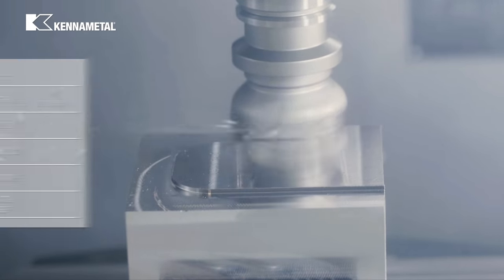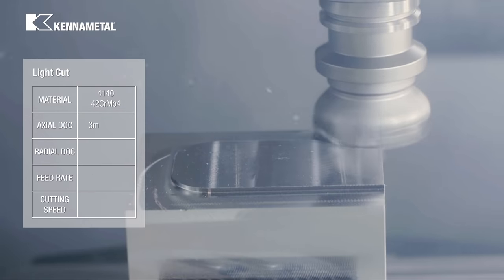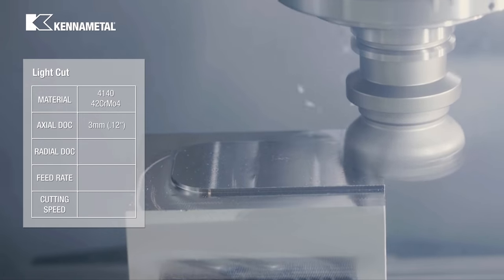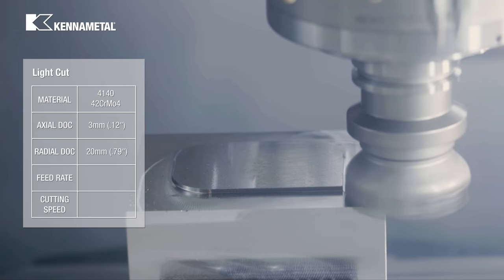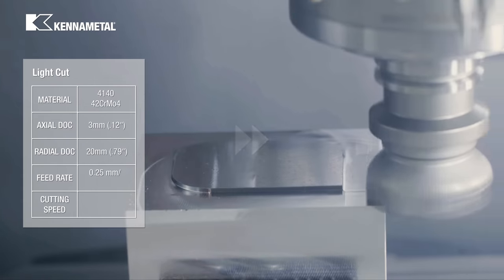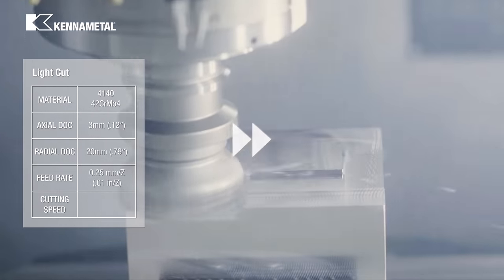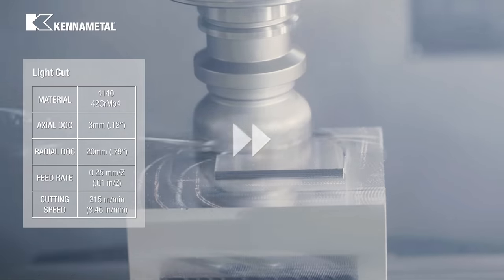Each pass with the following cutting parameters: 3 millimeter axial depth of cut, 20 millimeter radial depth of cut, a feed rate of 0.25 millimeters per tooth, and 215 meters per minute cutting speed.